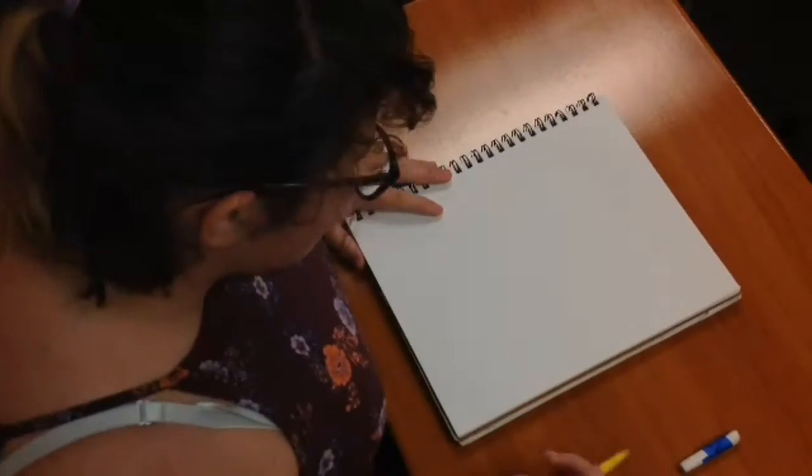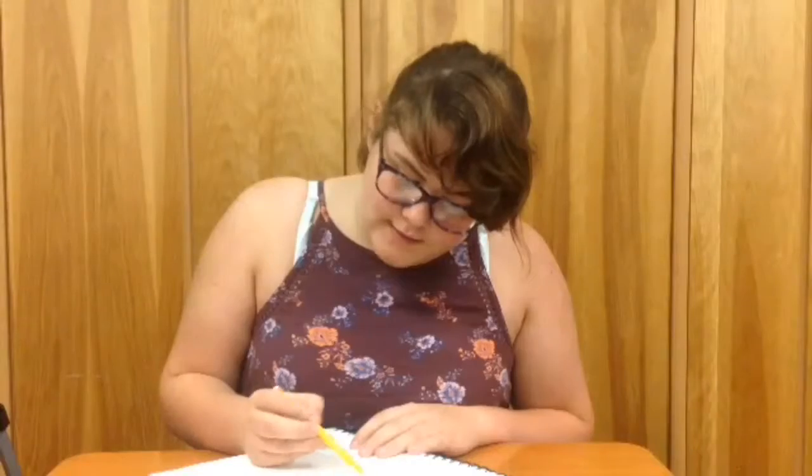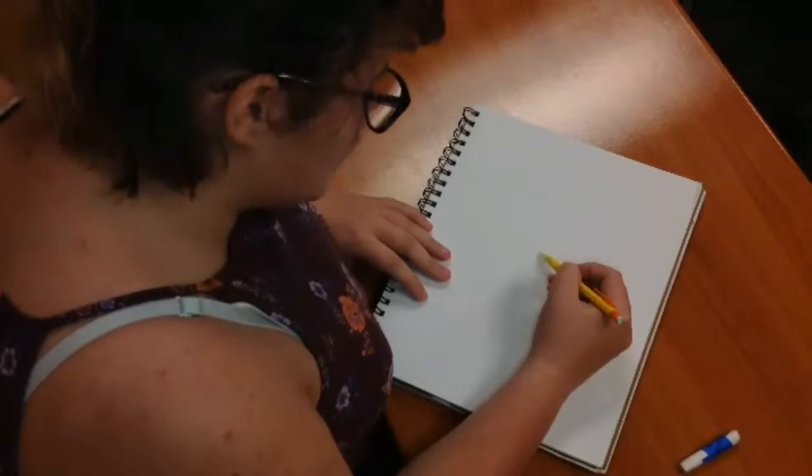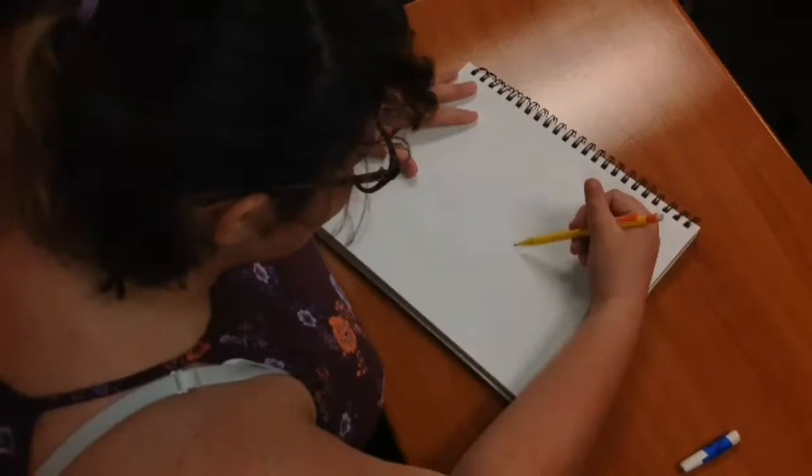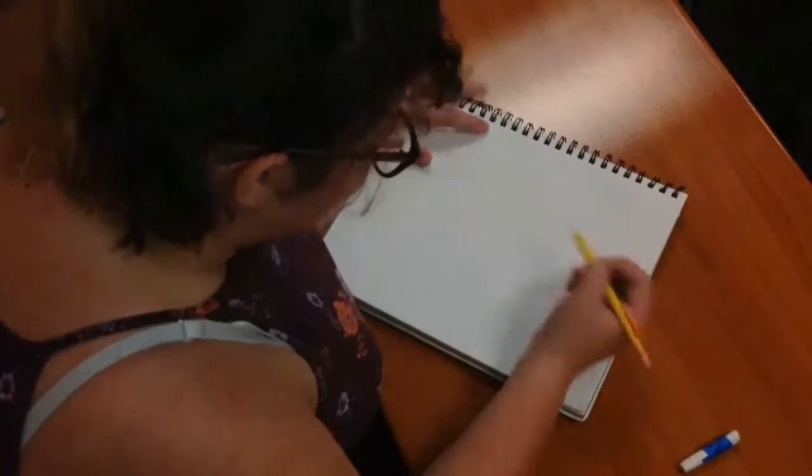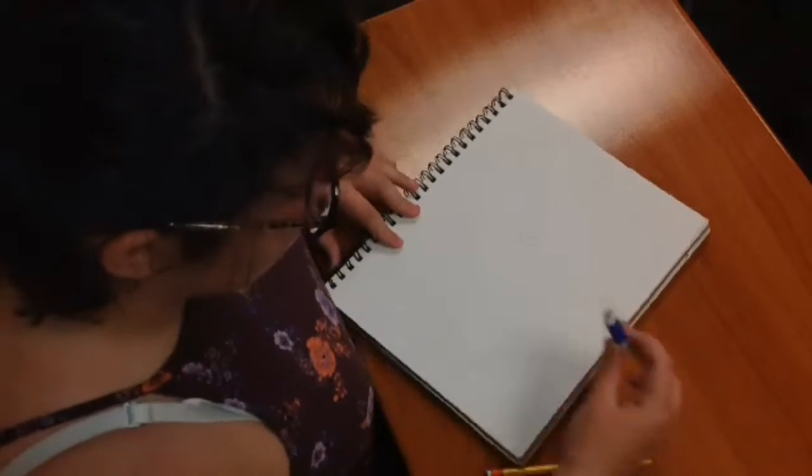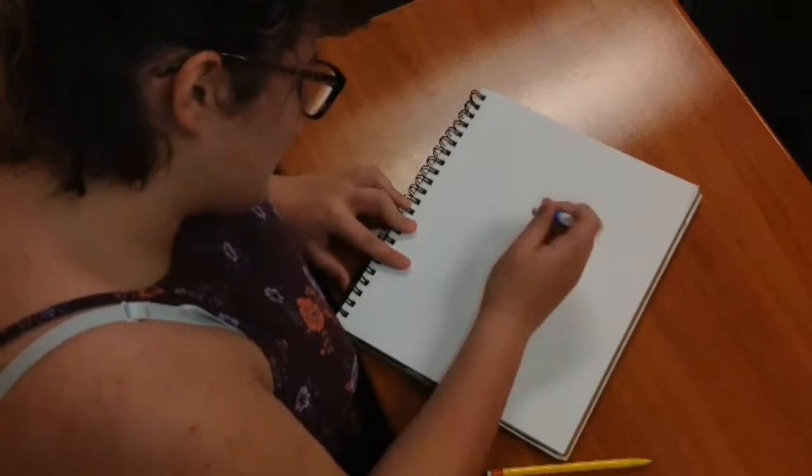So first you want to start out with a triangle going downwards, kind of like this. Try to make it as even as you can. And you want to shade it. It's not working.